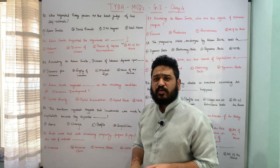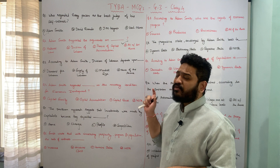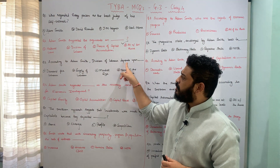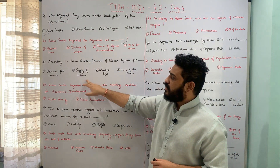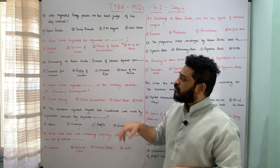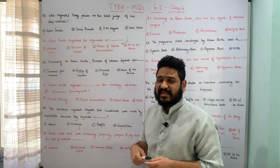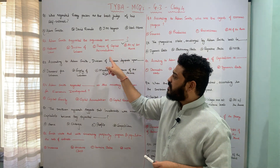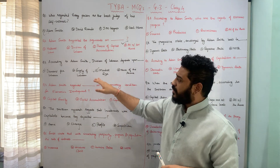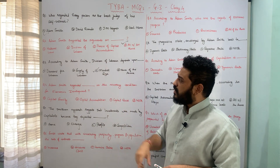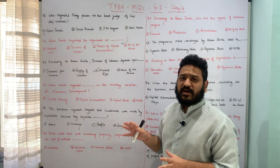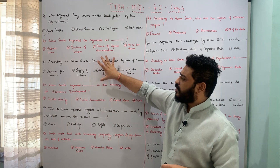The next question: according to Adam Smith, division of labor depends upon what? According to the Smithian analysis, division of labor depends upon A demand for labor, B supply of labor, C market size, or D none of the above. According to the Smithian analysis, the division of labor depends upon the market size, or the extent of market size to be very precise. The correct answer is C, market size.